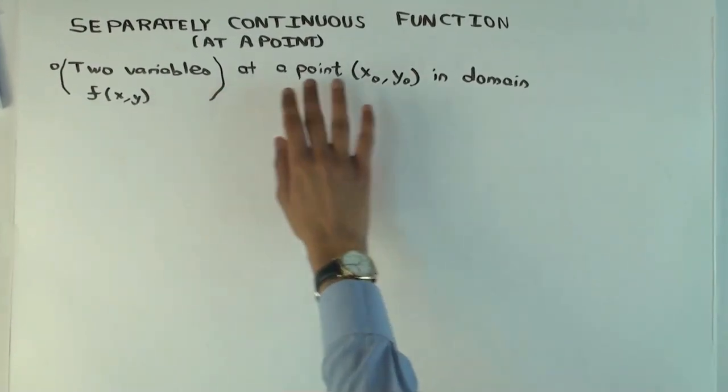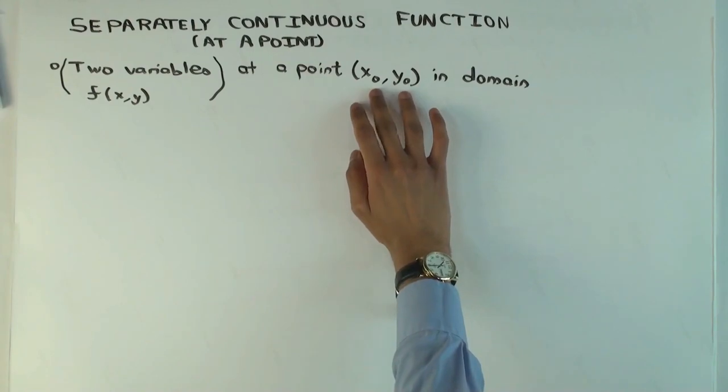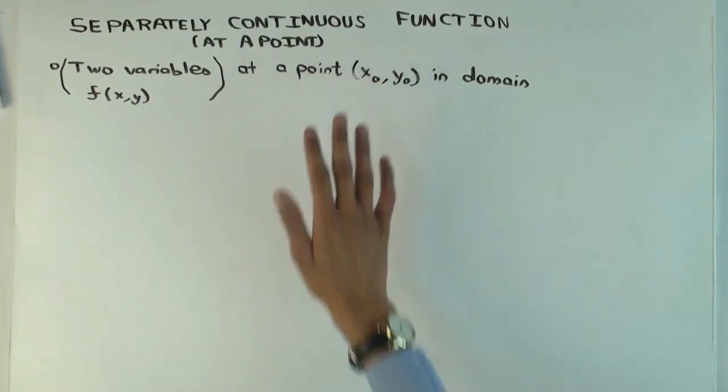So you have a function f of two variables, x and y, and there's a point x0, y0 in the domain. That's x equals x0 and y equals y0, an actual fixed point.